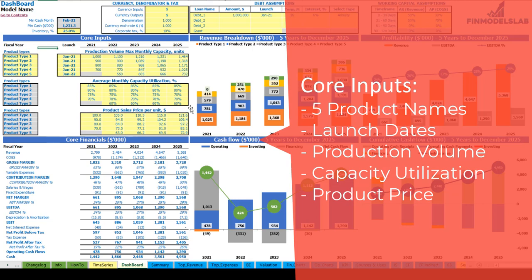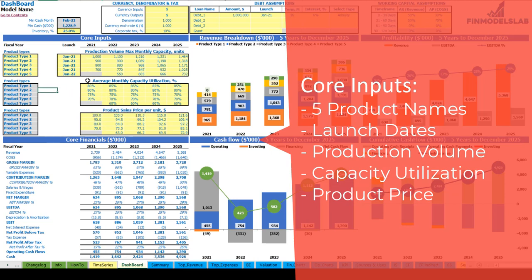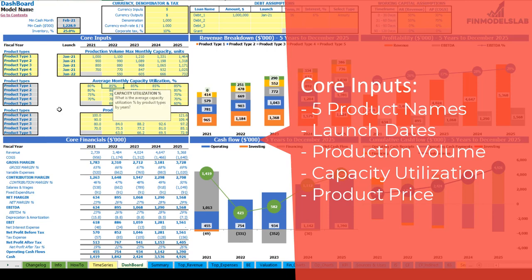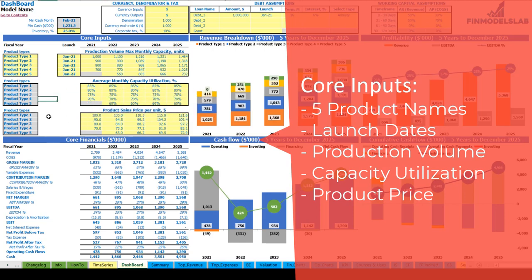There is a monthly capacity utilization percentage, by product types and by years. For example, if you put 80% it means that for 2021 on average you will produce 800 units per month instead of the maximum 1000 units. This percentage can grow over time — for example 80, 82, 84, etc. After you produce these product types you need to sell them, so in this step you can set up the product sales price per unit, which can also be changeable by years and by product types.